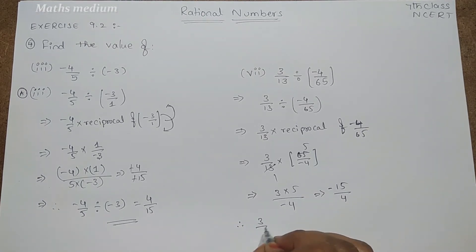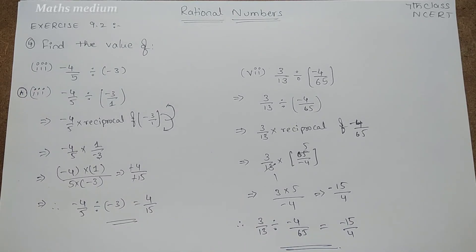Therefore 3/13 divided by -4/65 equals -15/4, the answer for this one. And this is how to divide rational numbers.